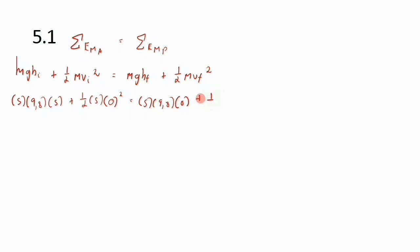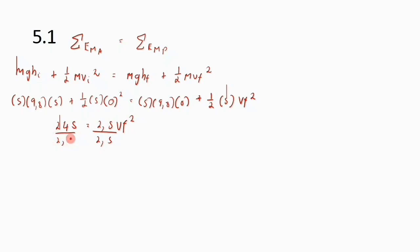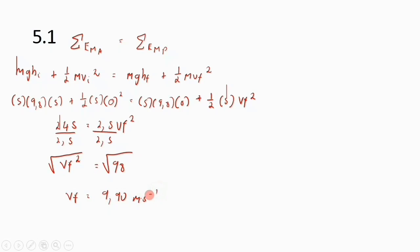We substitute: 5 × 9.8 × 5 + 0 = 0 + half × 5 × v_f squared. This gives us 245 = 2.5 v_f squared. Dividing both sides by 2.5 gives v_f squared = 98. Taking the square root, v_f equals 9.90 meters per second, rounded to two decimal places.